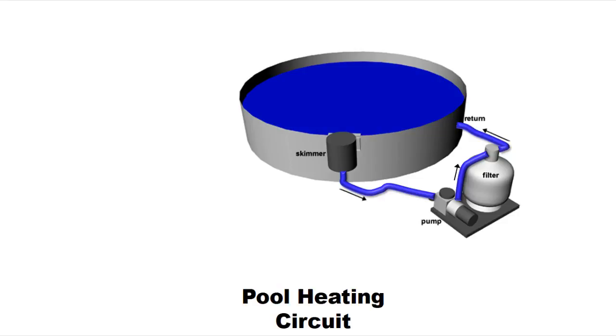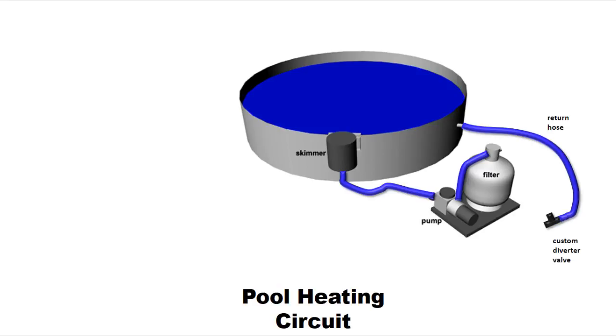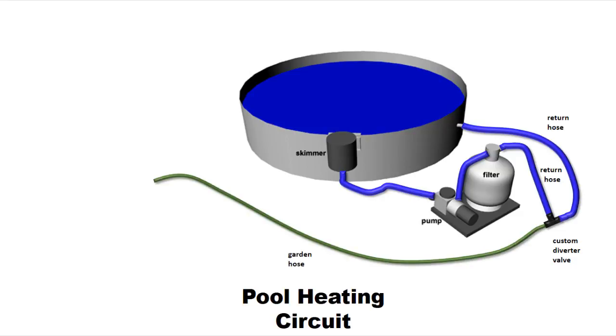Now to build the pool heater we're going to have to make some modifications to this. First we're going to disconnect the return line from the filter. Then I'll show you how to build a custom diverter valve. You're going to need an additional return line to connect this diverter back to your filter.